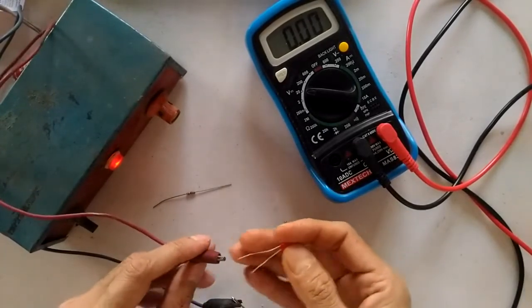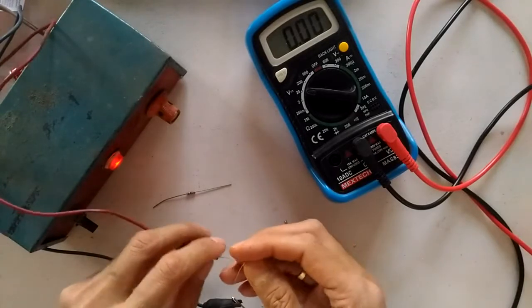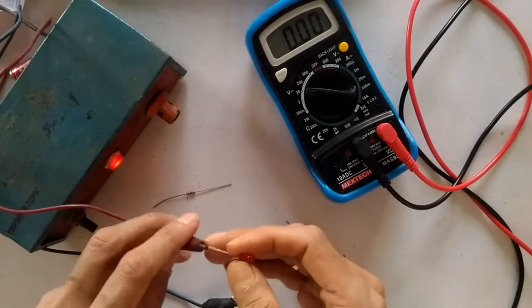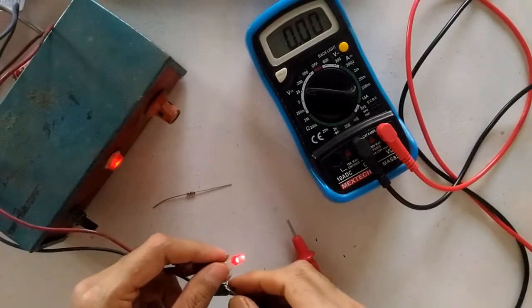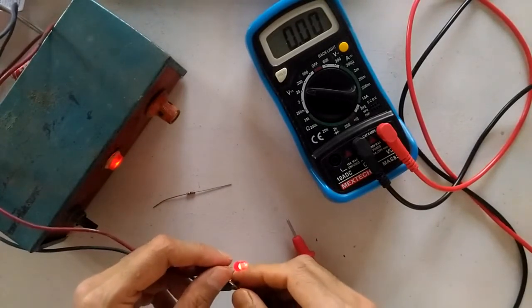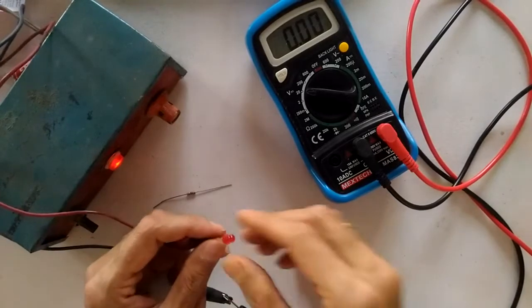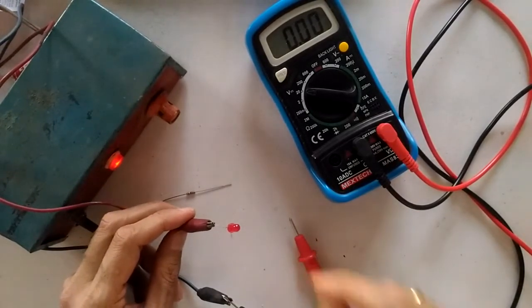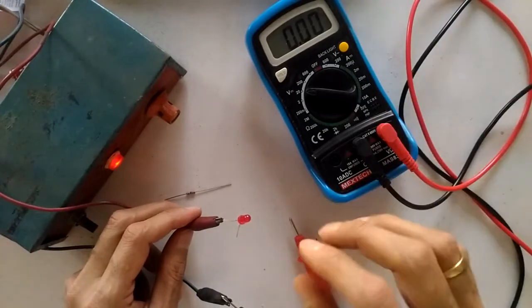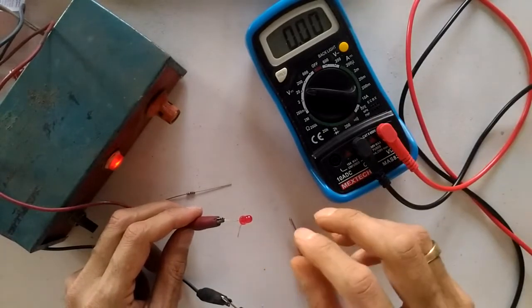Just to demonstrate, I'm going to connect it for a short time. LEDs are expected to be connected via a current limiting resistance. You can see the LED is glowing. Now, if I continuously use the LED like this, it will blow first of all.